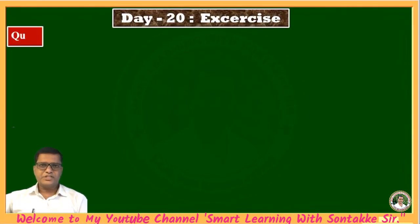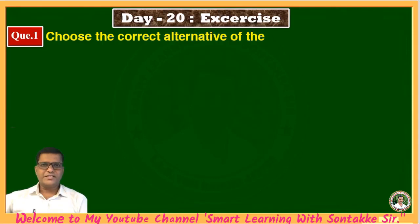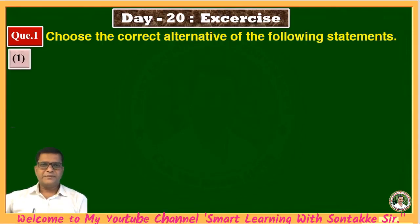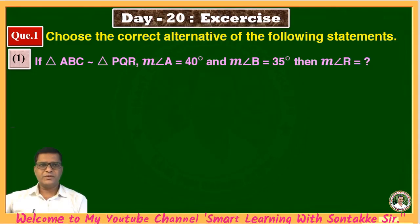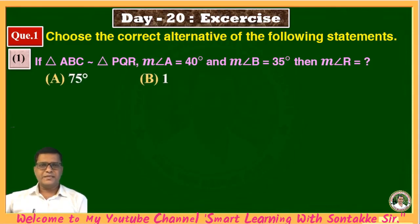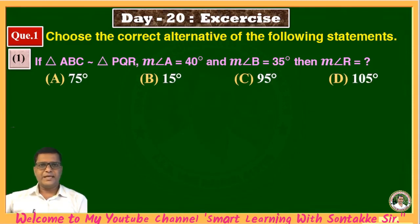In this exercise, the first question is: choose the correct alternative of the following statements. The first statement is: if triangle ABC is similar to triangle PQR, and angle A is equal to 40 degrees and angle B is equal to 35 degrees, then find angle R.